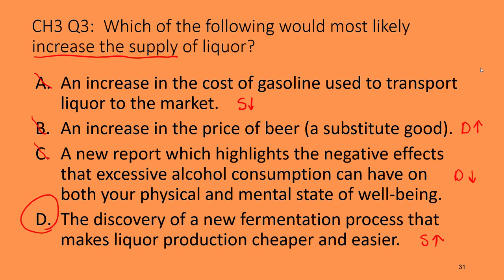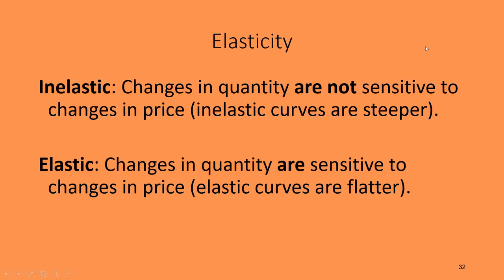That concludes our discussion of the law of supply, the difference between a change in quantity supplied and supply, and the shifters of the supply curve. Now that we've covered both demand and supply, let's talk about elasticity — a concept that applies to both. Elasticity refers to how responsive someone is to a change in price. We know that when price goes up consumers buy less and producers sell more, but elasticity tells us how much more or less.